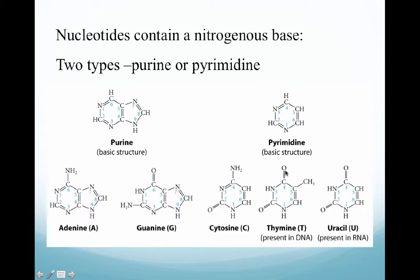Looking at the commonality between thymine and uracil structures, they're quite similar. The only thing really missing from uracil is the CH3 group off the number-5 carbon, and that is actually going to contribute to the poor stability of RNA.